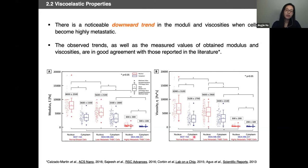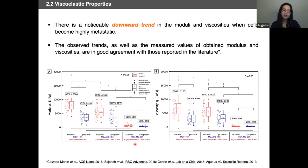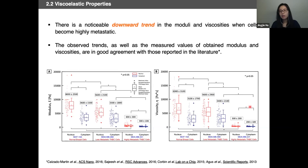We summarize the modulus and viscosity of three different types of cells for both the nucleus and cytoplasm: normal breast cells, less metastatic triple negative breast cancer cells, and highly metastatic triple negative breast cancer cells. Nuclei often exhibit much higher modulus compared to the cytoplasm, also in terms of viscosity, which makes sense as the nucleus is relatively stiffer. More importantly, we see an overall downward trend in both modulus and viscosity when a cell becomes highly metastatic. These results suggest our methodology successfully differentiates cancer cells with different metastatic potential, and we envision extending this methodology for detection and diagnosis of other human diseases.